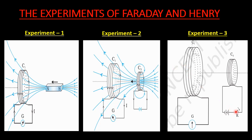In the third experiment, when the tapping key is pressed and released, the magnetic field increases at the time of pressing and decreases at the time of releasing. This causes the magnetic flux associated with coil C1 to change, and due to this change in flux, current is induced in coil C1 and the galvanometer shows deflection. Whenever there is no change in the magnetic flux linked with the coil, no current is induced.